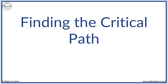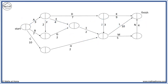In this lesson, we use the forward and backward scan on a network to determine the critical path. Here is a network showing the times to complete the tasks in a project. We start the forward scan by filling the numbers in the left half of each circle. We always start with a zero in the left of the start node. To complete the forward scan, we write the longest path to each node.